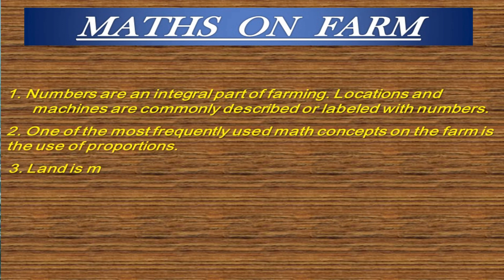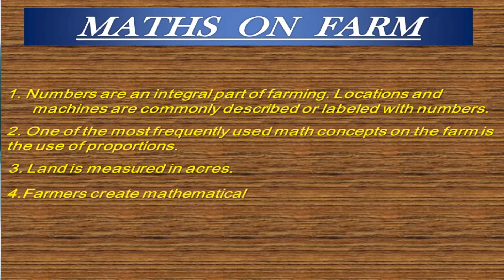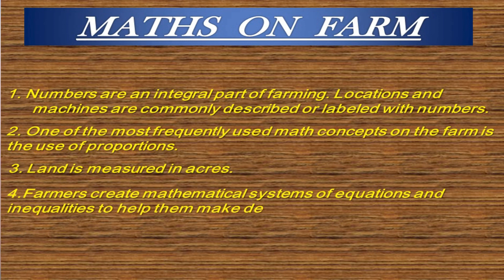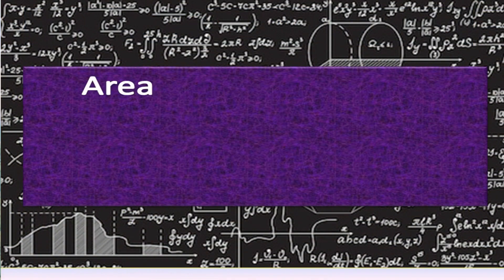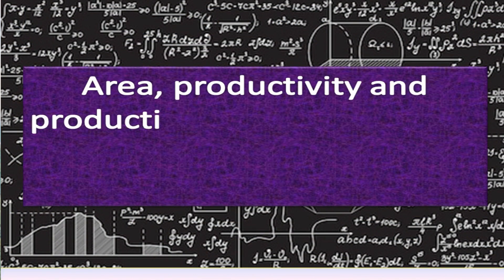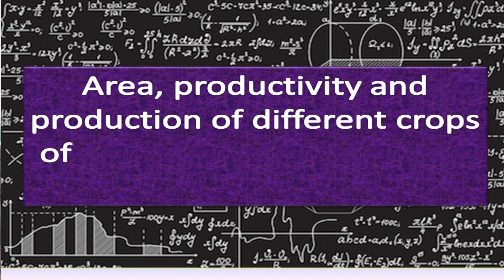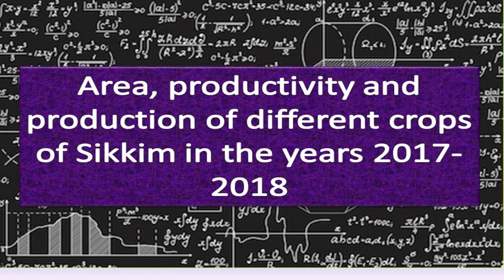Land is measured in area. Farmers create mathematical systems of equations and inequalities to help them make decisions about which crops to plant in which fields. Now, let us look at the area, production, and productivity of different crops of Sikkim in the year 2017 to 2018.